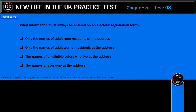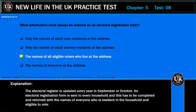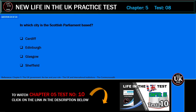What information must always be entered on an electoral registration form? Only the names of adult men residents at the address; only the names of adult women residents at the address; the names of all eligible voters who live at the address; or the names of everyone at the address? Correct answer: the names of all eligible voters who live at the address. Explanation: The electoral register is updated every year in September or October. An electoral registration form is sent to every household and must be completed and returned with the names of everyone who is resident in the household and eligible to vote.